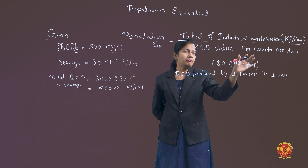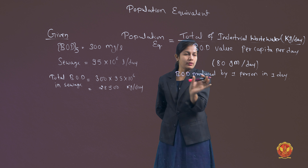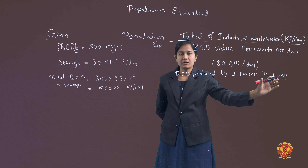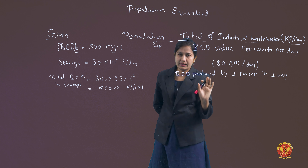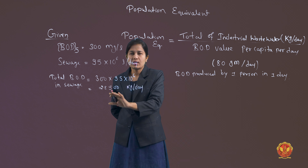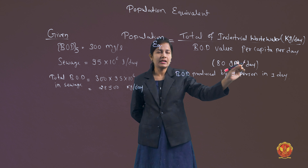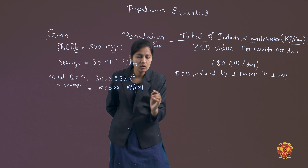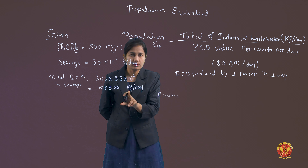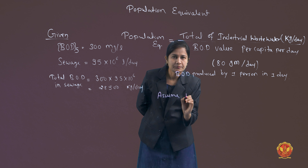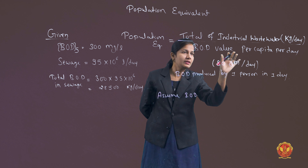Now, what do we assume? Since the BOD value per capita is not given, we assume that the BOD produced by one person in one day is 80 grams per day. We assume domestic sewage BOD to be 80 grams per day. Since we need kilograms, that is 0.08 kg per day.